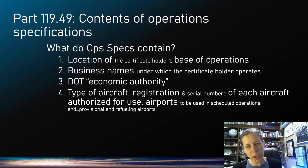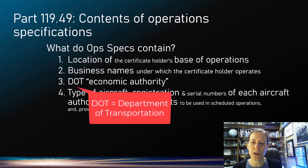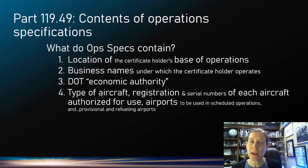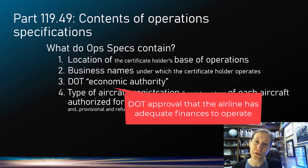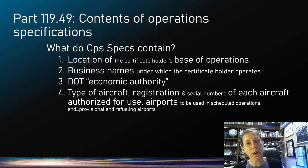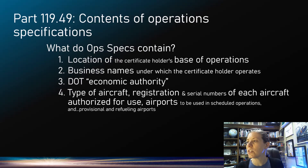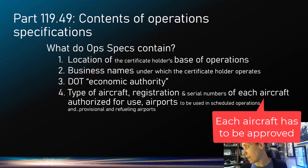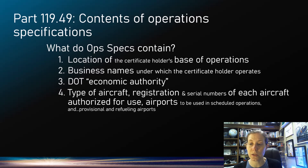The Department of Transportation, or DOT, gives each air carrier what they call economic authority — meaning they've checked your financials to make sure you are a legitimate company that can operate. That economic authority is one of the requirements to actually operate. Ops specs also include the type of aircraft and the registration numbers of aircraft. Air carriers cannot randomly add airplanes to the certificate; they have to have the list of airplanes authorized in their ops specs, specific to registration and serial numbers.